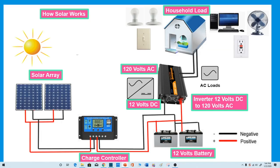A solar panel or PV inverter is a type of electrical converter which converts the direct current output of a photovoltaic solar panel into an alternating current that can be fed into your home.